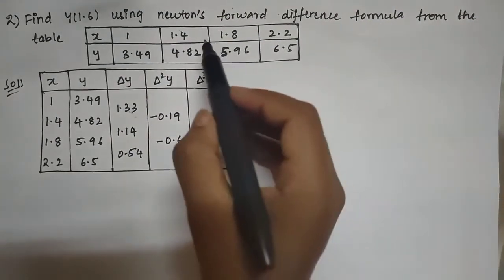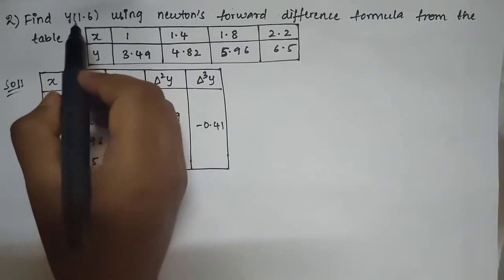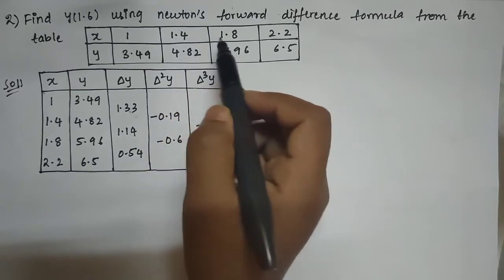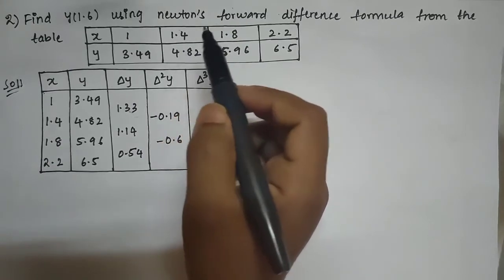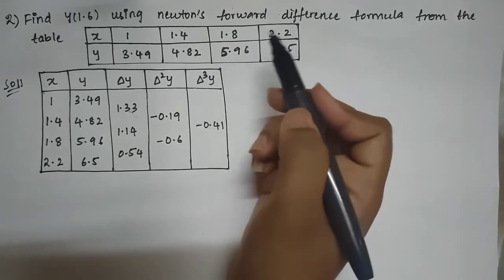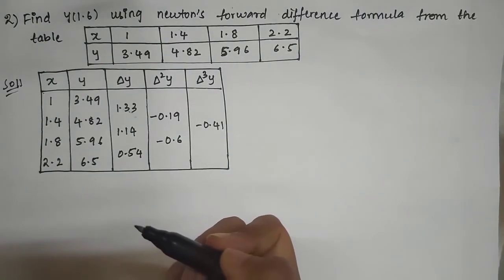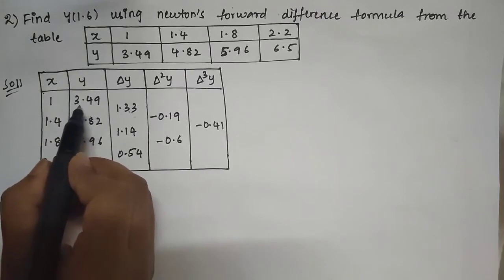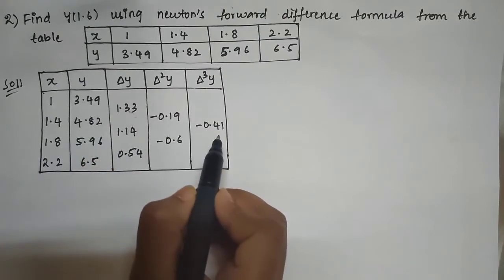Since the question asks for y(1.6), and 1.6 lies between 1.4 and 1.8, we take forward difference — values near the beginning of the table. If the value had lain near the end (e.g., between 1.8 and 2.2), we would use backward difference. For forward difference, we consider only Δy₀, Δ²y₀, and Δ³y₀.